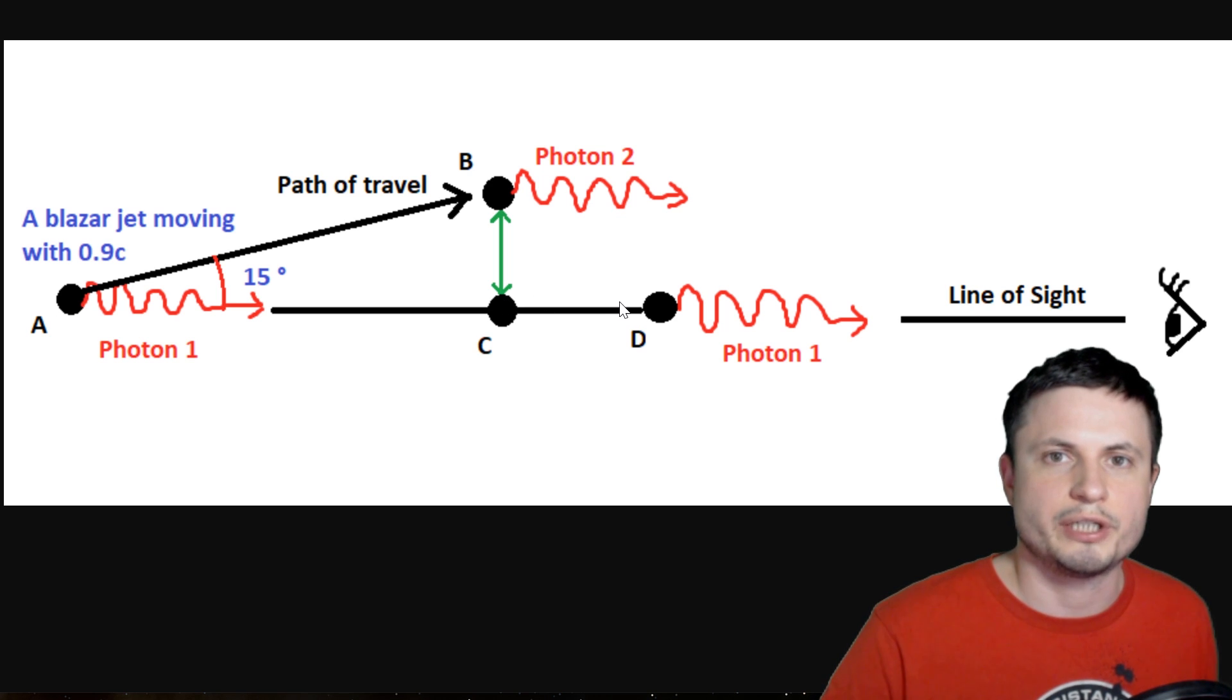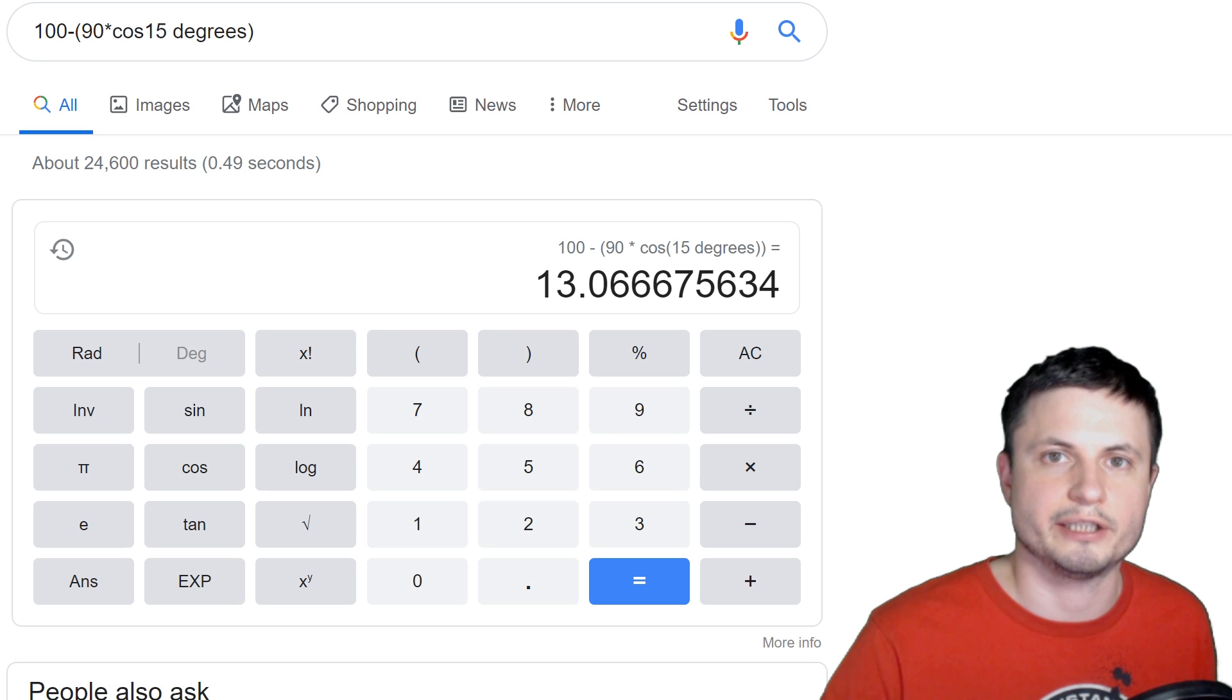giving us about 13 light years. So essentially, this distance CD is about 13 light years. Okay, but now we also have to look at this here. How do we find that? So once again,